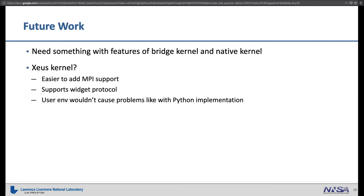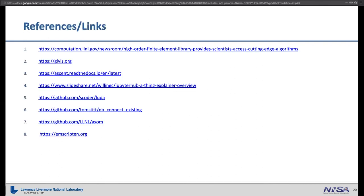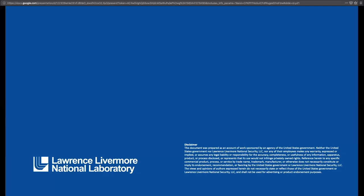For future work, we want something that combines attachable diagnostics like the bridge kernel with the ability to just start a kernel from the JupyterLab interface. We're looking at the Xeus kernel in C++ — we feel much more confident about adding MPI support there. It supports the widget protocol, so we could add a C++ kernel implementation of our widget, and since we wouldn't be building with Python we wouldn't worry about user environments affecting our build or startup.